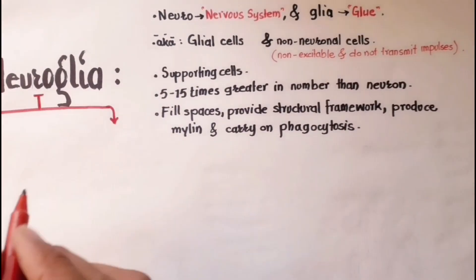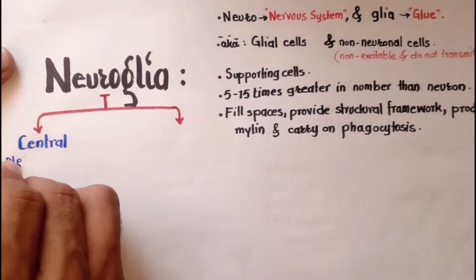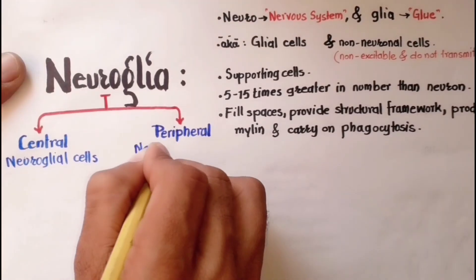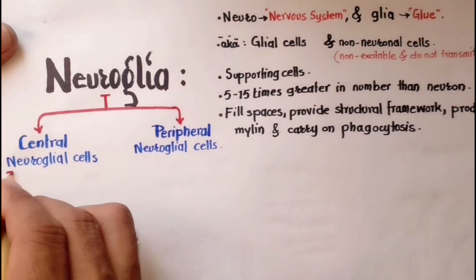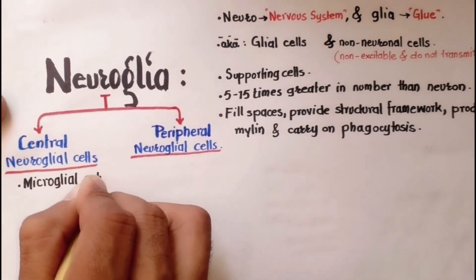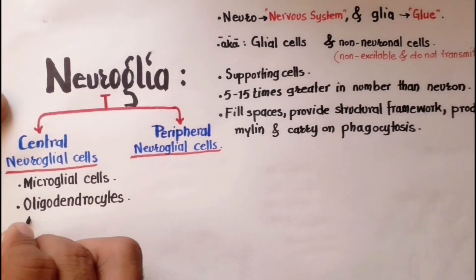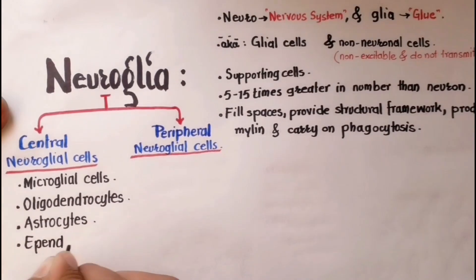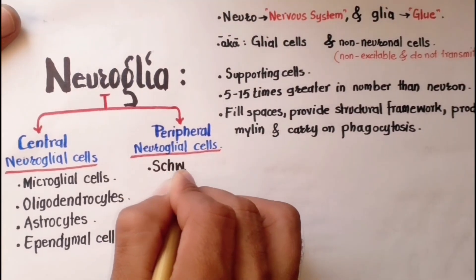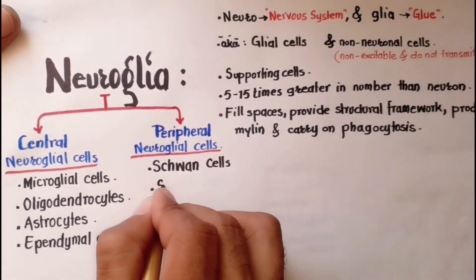Neuroglial cells are classified into the central neuroglial cells and the peripheral neuroglial cells, based on their presence in the CNS and peripheral nervous system. The central neuroglial cells are of four types: microglial cells, oligodendrocytes, astrocytes, and ependymal cells. The peripheral neuroglial cells are classified as Schwann cells and satellite cells.